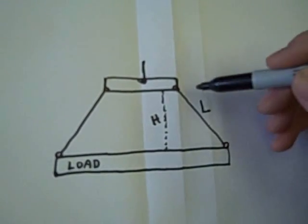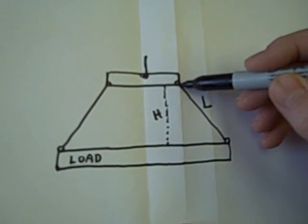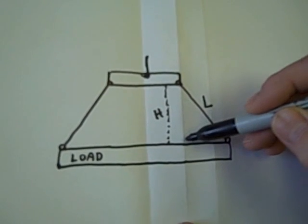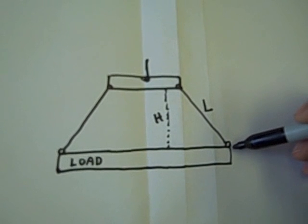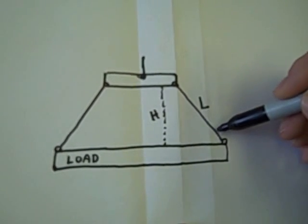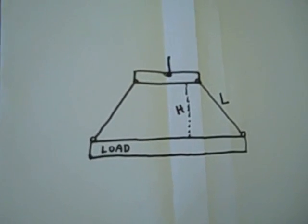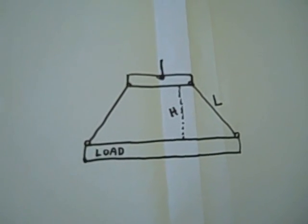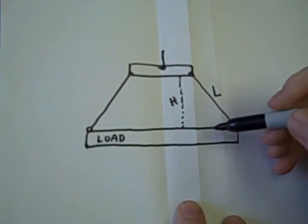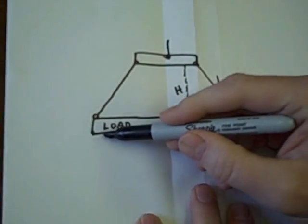So even though you use a spreader beam, if it's not 90 degrees, there are additional forces on that sling. In our next lesson we will talk about how to lift a load and make it level.